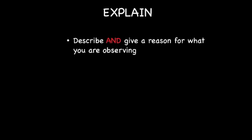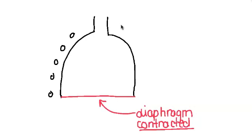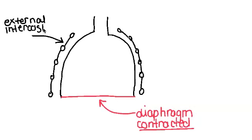Explain is the command term that's like describe, but it's describe and give a reason for what you're observing. And without that reason, you are not going to get full marks. For example, when you're explaining the mechanism of ventilation, you need to talk about the change that occurs and the actions that cause that change.